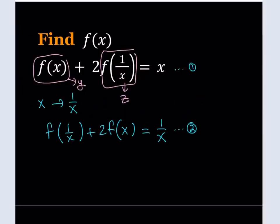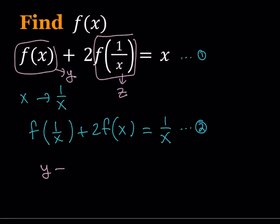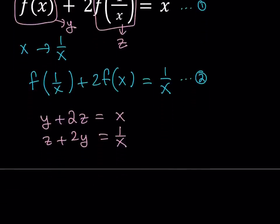The first equation gives us y plus 2z equals x. The second equation gives us z plus 2y is equal to 1 over x. Since we're looking for f of x, our goal is to solve for y here. So I want to get rid of z. So I need to eliminate z. To eliminate z, I'm going to multiply the second equation by negative 2. This is called elimination and it's a very effective method for solving systems.